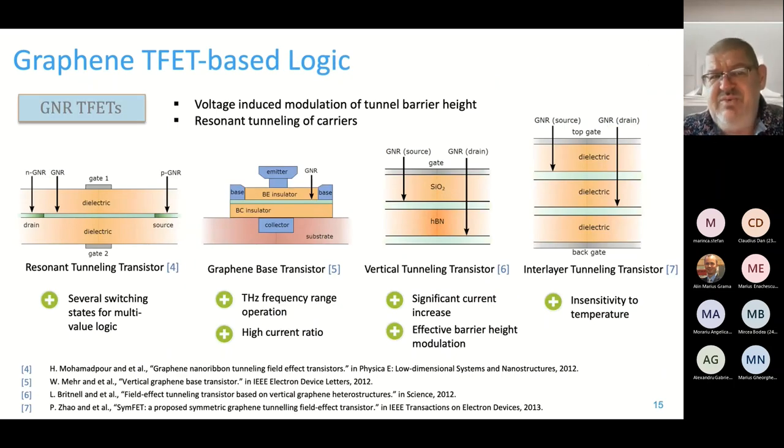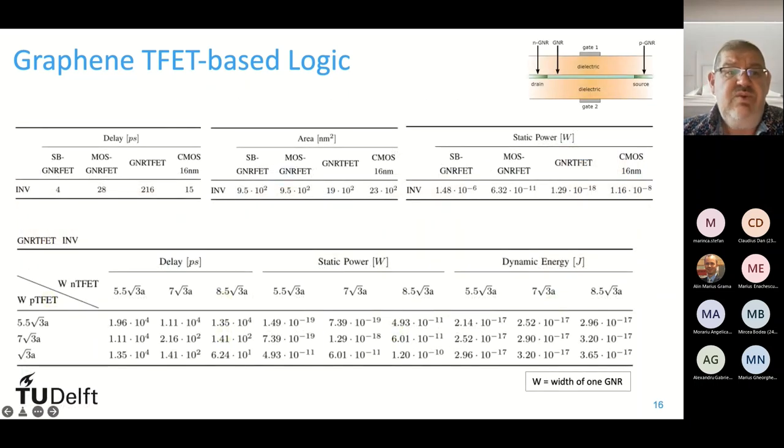You are probably also familiar with the tunneling FET. And if you try to make a FET with graphene, why not to make a tunneling FET? And here you have four such proposals. Again, whatever you see green is graphene. And if we now make use of the tunneling FET, we can revisit the evaluation and we can see that, as expected, it's very slow, the tunneling FET, but is very good in terms of static power. There are 10 orders of magnitude better in terms of static power than the CMOS 60 nanometer.